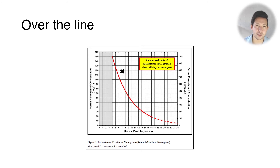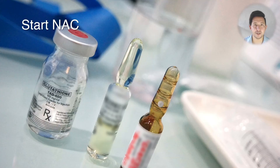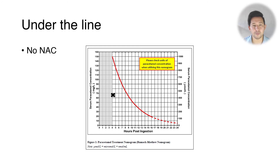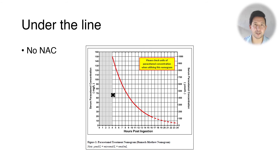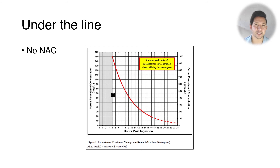So if you plot your concentration and it comes up here, like in this graph, then you should start N-acetylcysteine as soon as possible. If you plot your concentration and it comes up below the line, then you don't need to give your patient NAC, with the slight caveat that if you're very close to the line, it may be worth giving NAC anyway, because sometimes the time of ingestion is not a 100% certain fact.